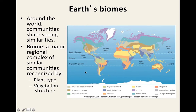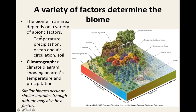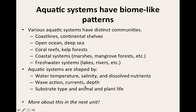Temperature and precipitation are very important for classifying a terrestrial biome. We'll look at a thing called a climatograph — a special graph showing temperature and precipitation on the vertical axis, with months on the horizontal axis.